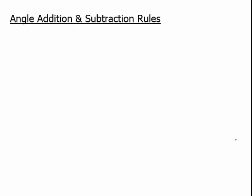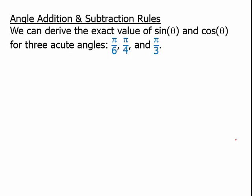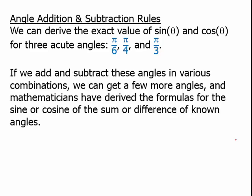Next we'll talk about the angle addition and subtraction rules. We can derive the exact values of sine and cosine for three acute angles: pi over 6, pi over 4, and pi over 3. Those are our angles in the special triangles. If we add and subtract these angles in various combinations, we can get a few more angles, and mathematicians have derived the formulas for the sine or cosine of the sum or difference of two known angles.